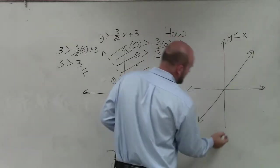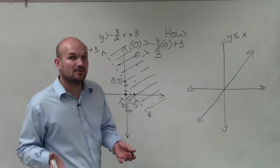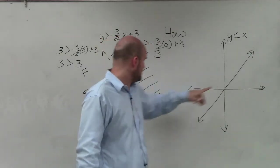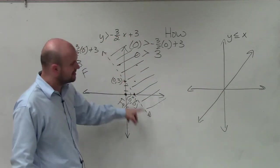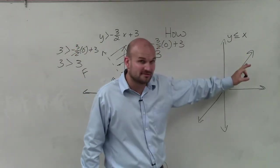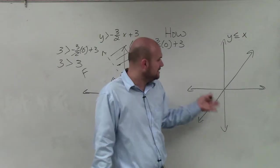Now we have a dilemma over here, because I always say (0,0), but now (0,0) lies on the line. So if we use (0,0), it's like testing this point again. We already know the points on the line are part of the solution, so there's no point in testing (0,0).